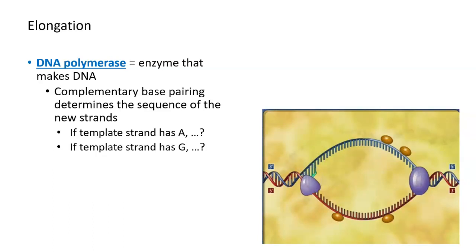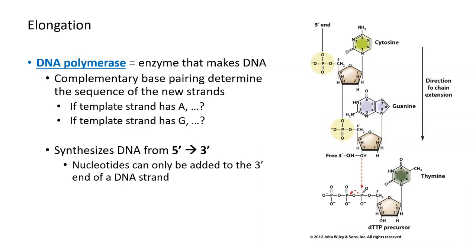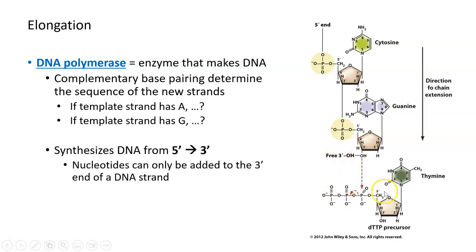DNA polymerase can only add nucleotides to an existing piece of either RNA or DNA. The reason is that DNA polymerase catalyzes a reaction that requires a free 3'OH group — it catalyzes the formation of a bond between the phosphate group on the 5' carbon of one nucleotide with the hydroxyl group on the 3' carbon of another. We say that DNA polymerase makes DNA from 5' to 3', and all new nucleotides are added to the 3' end of a growing DNA chain.